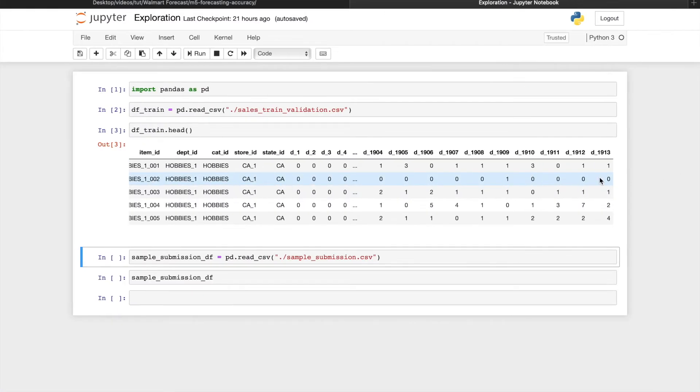As mentioned in the last video, since we're in the validation phase, this file is currently called salestrainvalidation.csv, and we can only see 1913 historical sales data, with the last 28 days hidden from us.